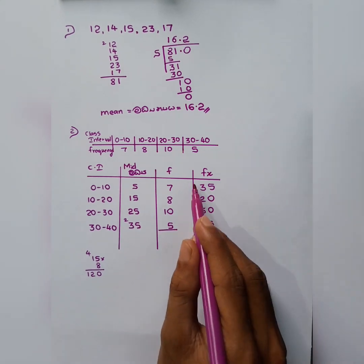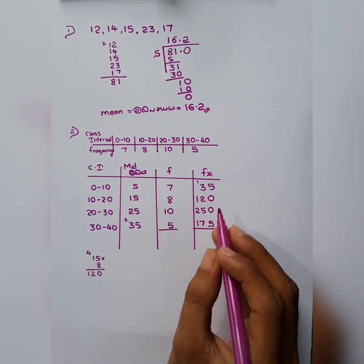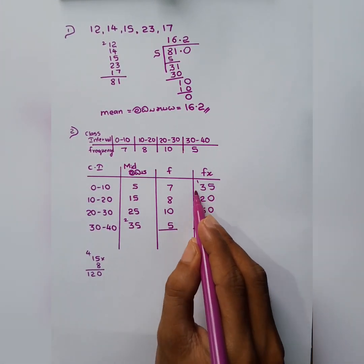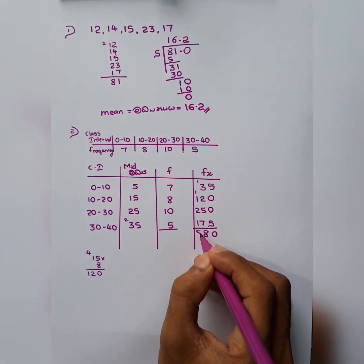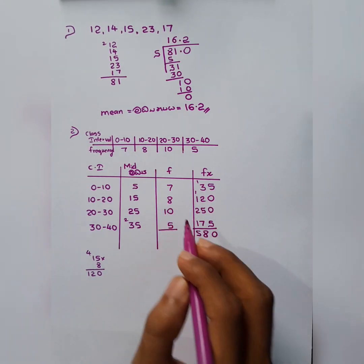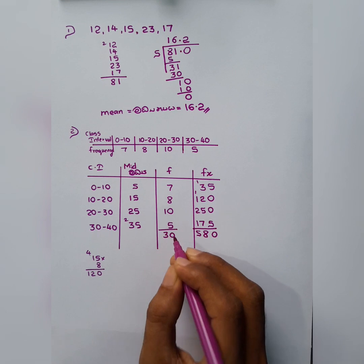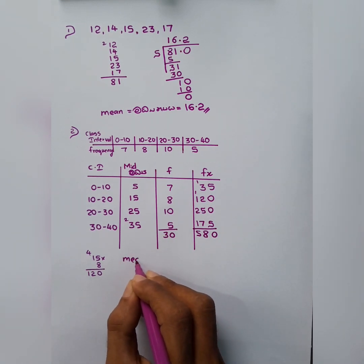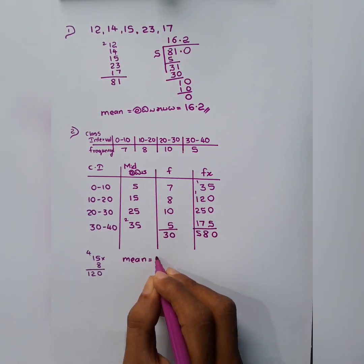5 plus 5, 10. 18. 5. And here 15, 15, 30. Then the mean is sigma fx over sigma f.